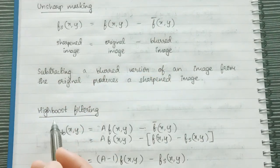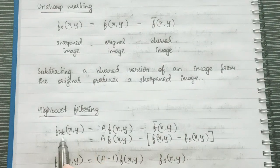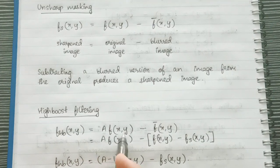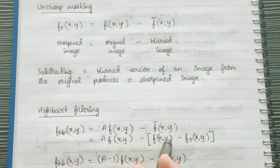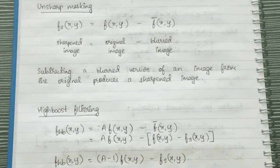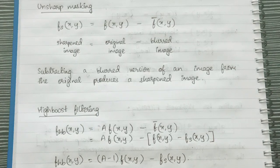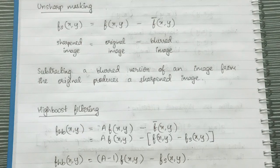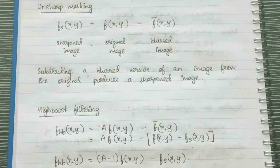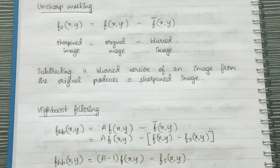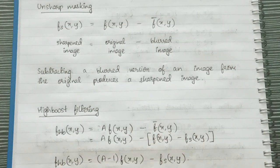Now let's look at what is high boost filtering. fhb(x,y) = A*f(x,y) - f'(x,y). Now what is happening here? We take a factor called A which specifies the amount of sharpening of the image. So we just multiply that factor by the original image and subtract the blurred version from it. So because of that we get a more sharpened image. So the greater the value of this A, the more sharpened our image will be.